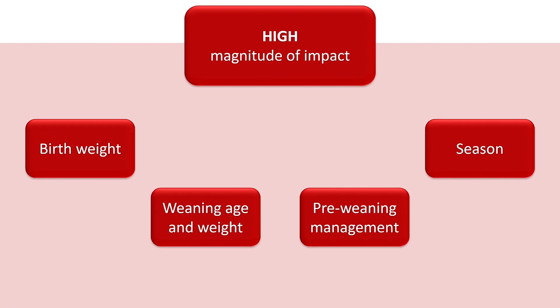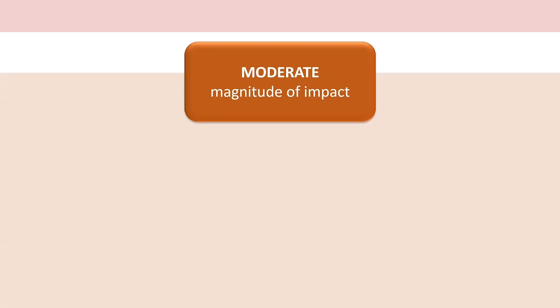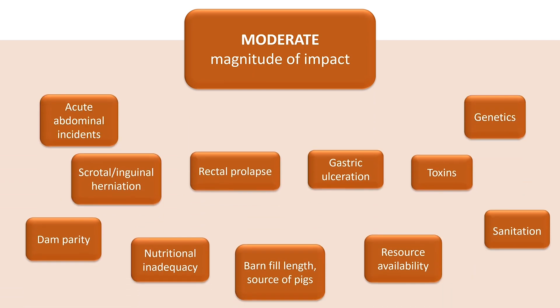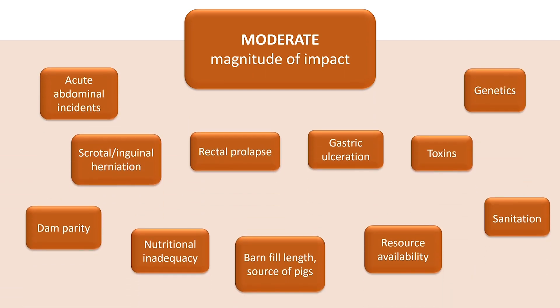Factors associated with a moderate magnitude of impact include acute abdominal incidence, commonly referred to as torsions, prolapse, gastric ulceration, various toxicities, genetics, various nutritional inadequacies including gross mistakes regarding calcium-to-phosphorus ratio or lack of vitamin E or selenium, resource availability, and sanitation practices, among other causes.